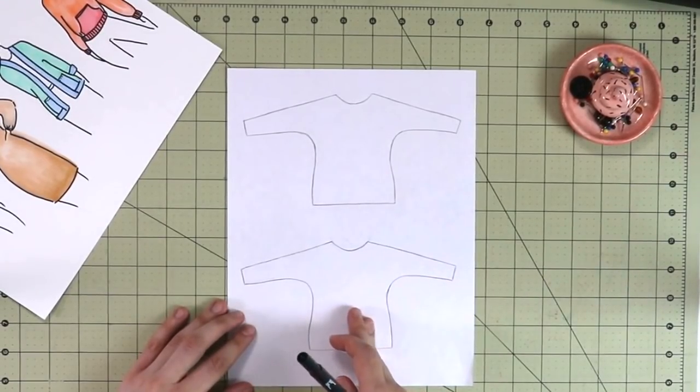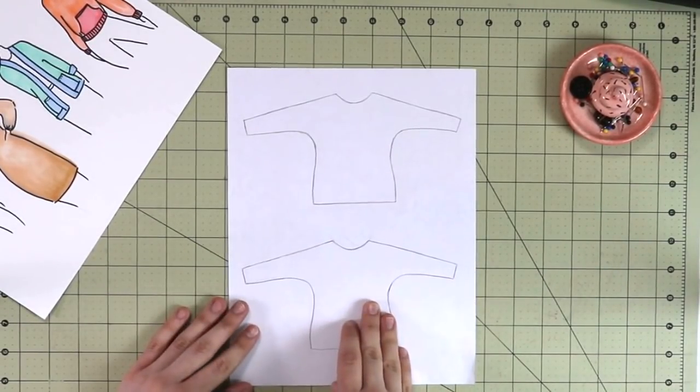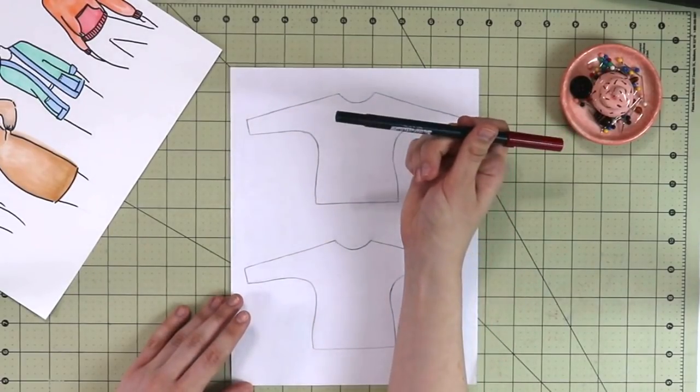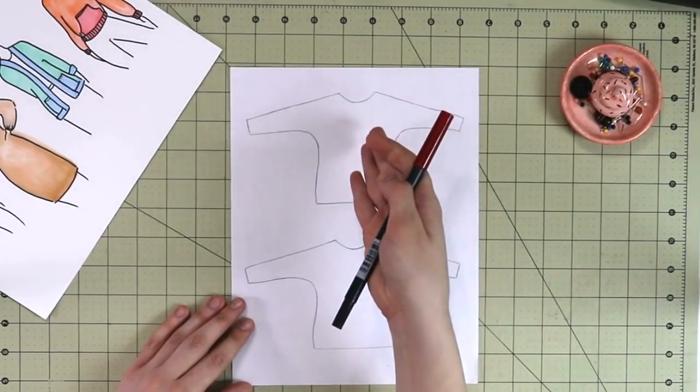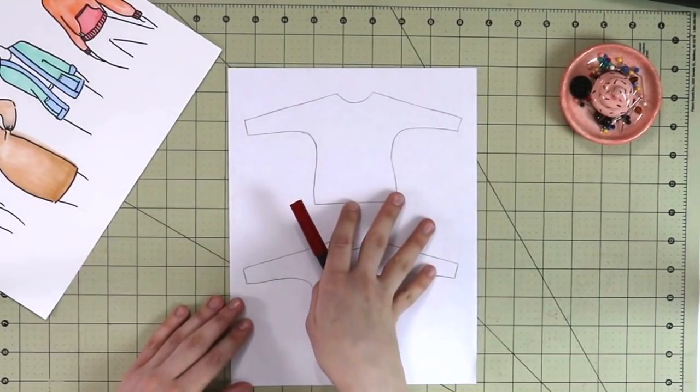Here I have two sketches outlined of the top that we've drafted in a previous video. And with the red marker, I will show you the differences between a sweater and a hoodie. So let's get started.